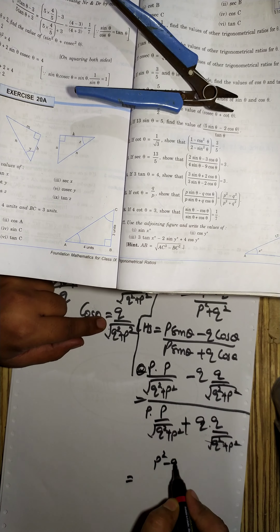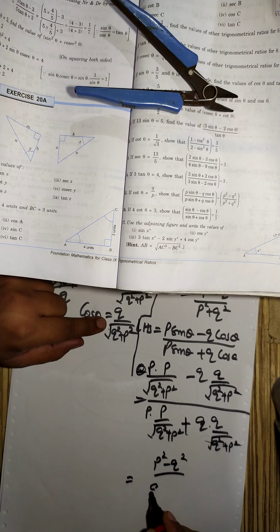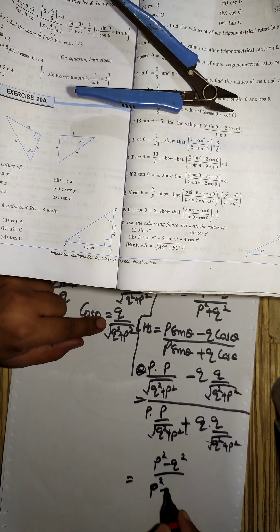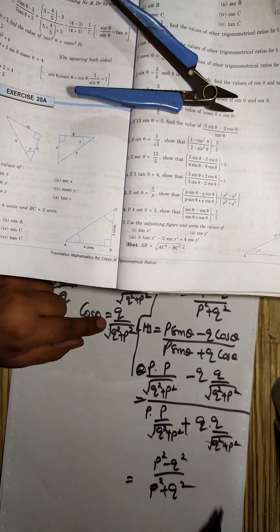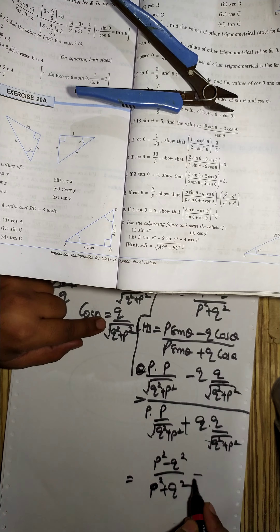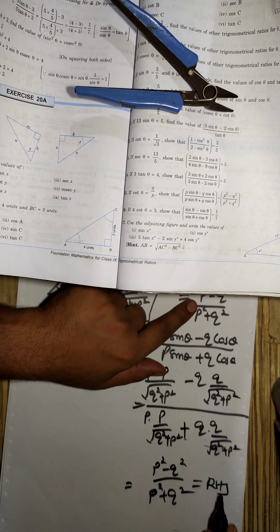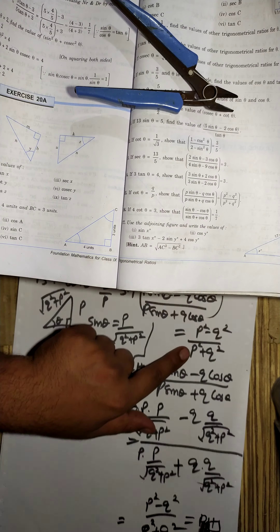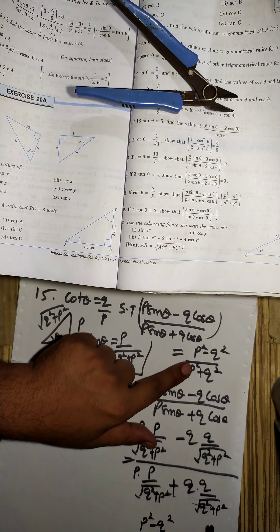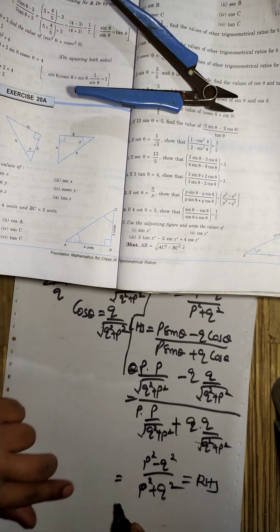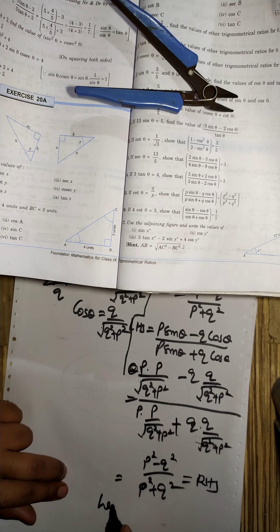We get p square minus q square upon p square plus q square. This is the right hand side of the equation. Hence, proved.